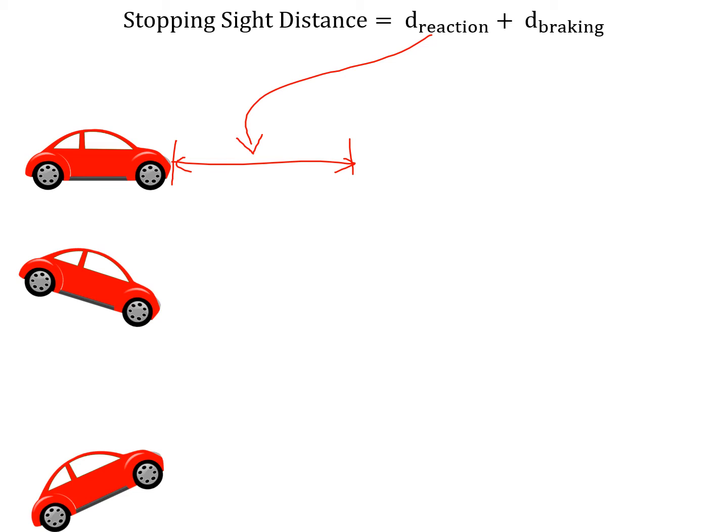The second distance, therefore, is the braking distance. This is the second distance in the stopping sight distance process. The braking distance is based on the assumed deceleration rate and the vehicle speed. Grade can also play a role if the road is not flat.